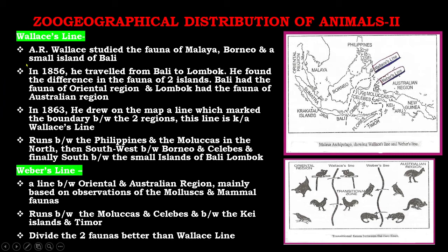Now we come to two famous lines. The first is the Wallace line. A.R. Wallace studied the fauna of Malaya, Borneo, and the small island of Bali in 1856. He traveled from Bali to Lombok and found a difference in the fauna of the two islands: Bali had the fauna of the Oriental region and Lombok had the fauna of the Australian region. In 1860 he drew on the map a line marking the boundary between the two regions, and this line is known as the Wallace line. It runs between the Philippines and the Moluccas in the north, then southwest between Borneo and Celebes, and finally south between the small islands of Bali and Lombok.